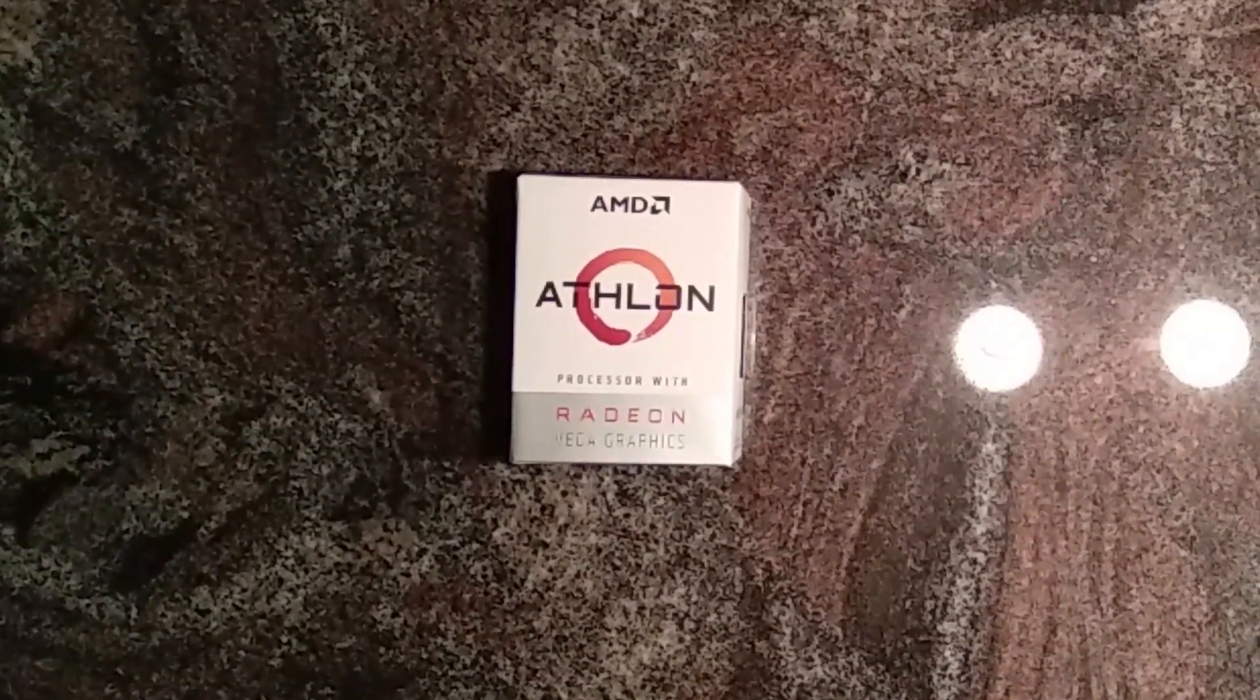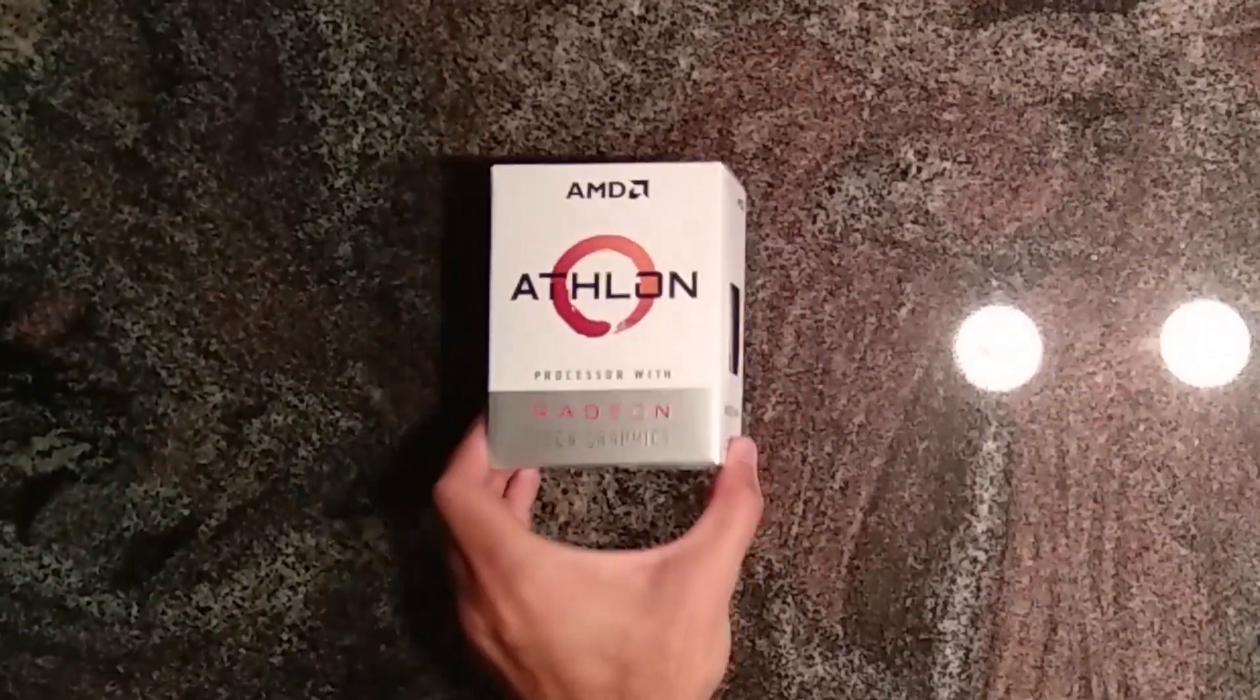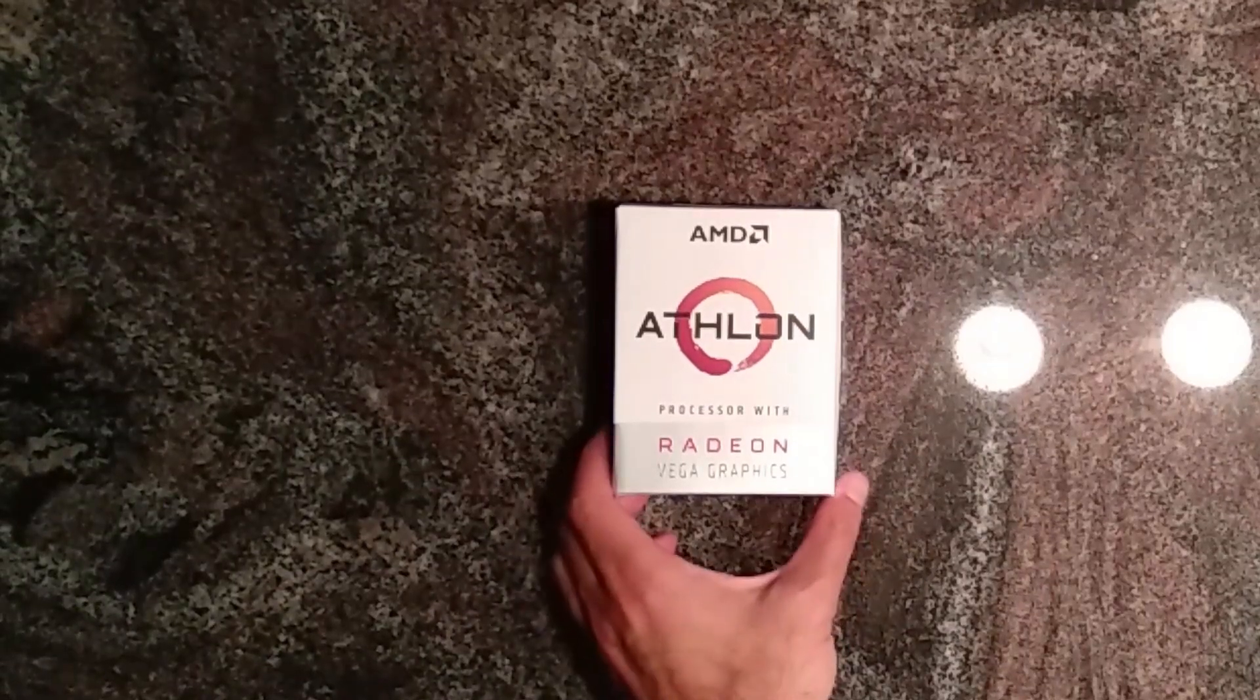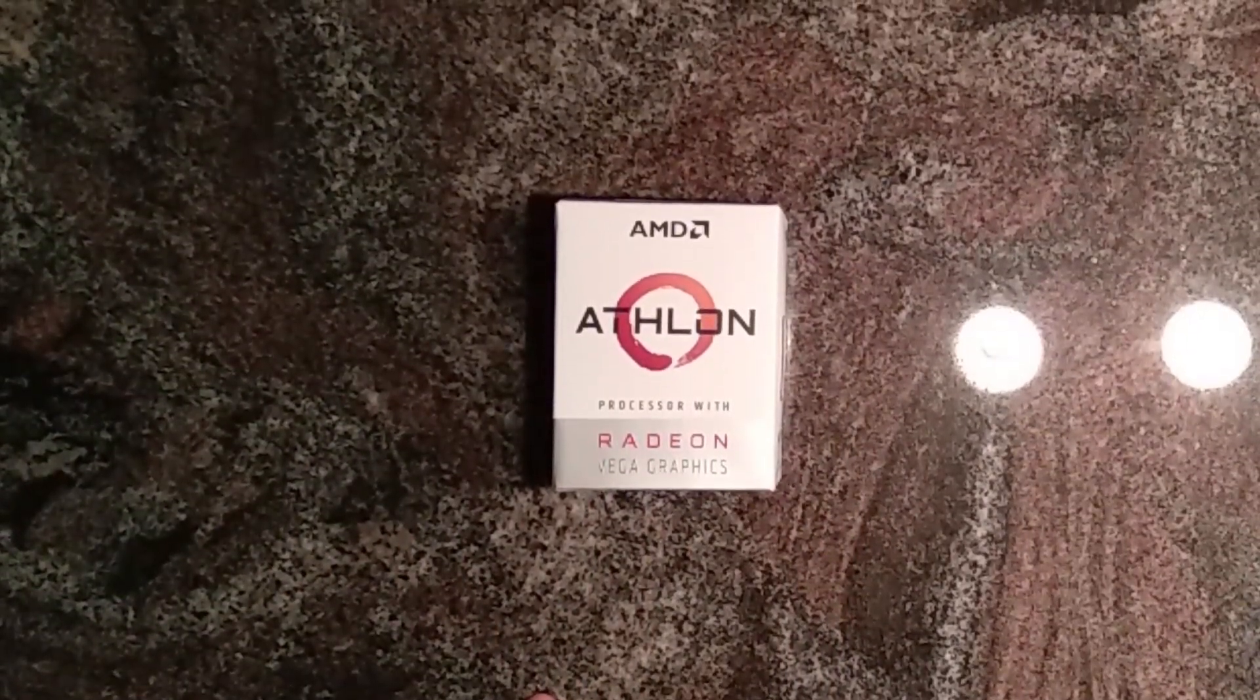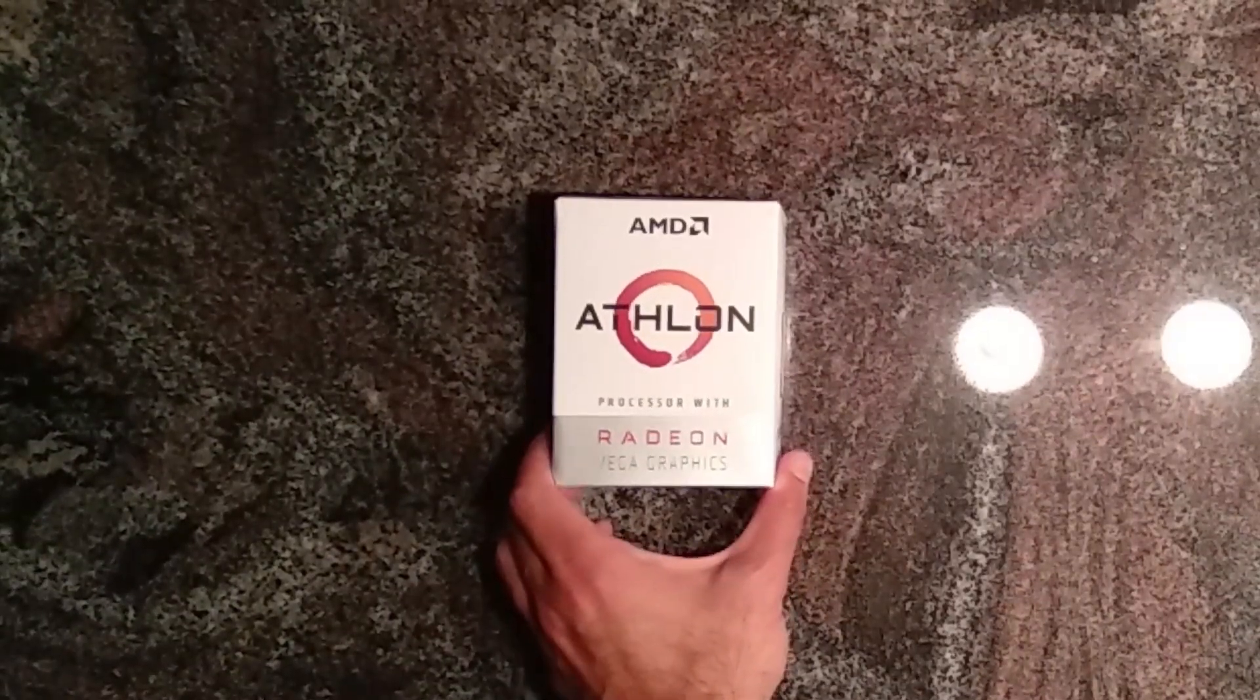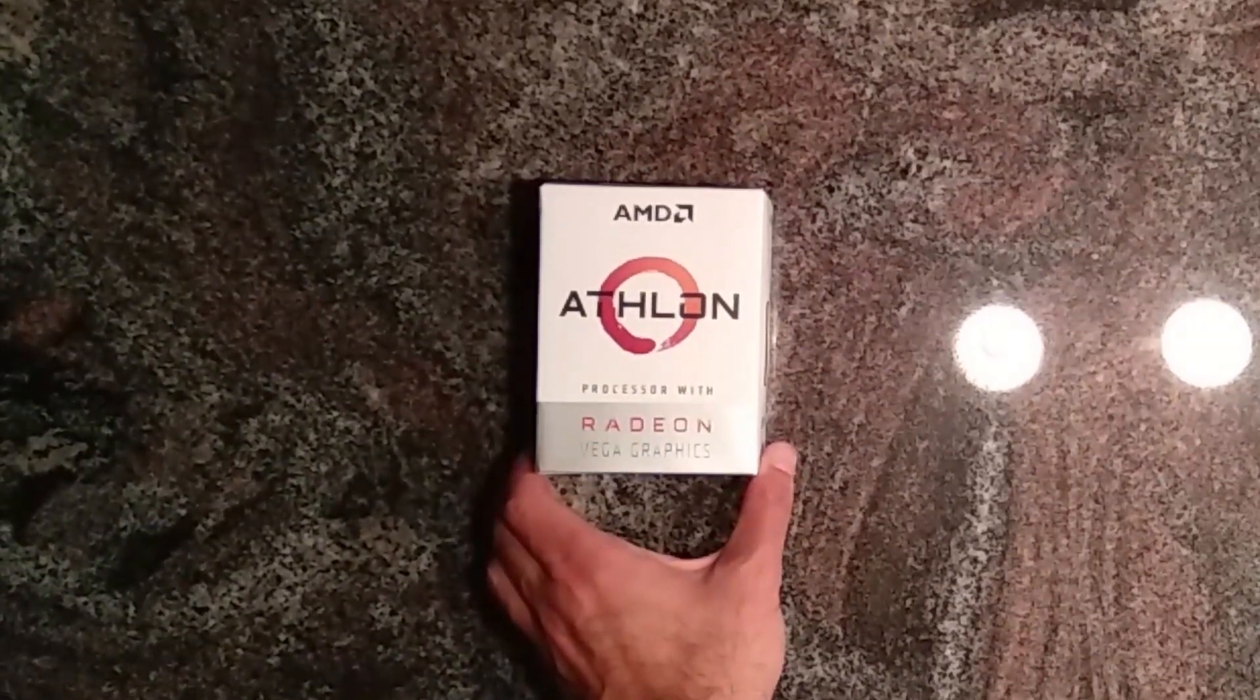Hi everybody, welcome to a quick unboxing of the Raven Ridge based Athlon 200 GE. As you know, back in the day Athlon stood for AMD's high performance segment. We had Athlon on one side and Sempron for the entry level. Nowadays, Athlon stands for the budget segment of AMD and consists mostly of APUs with a disabled GPU.